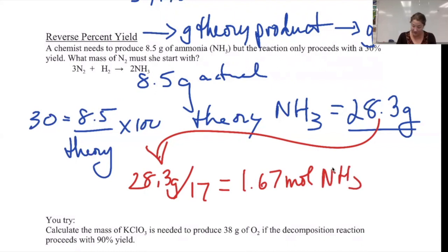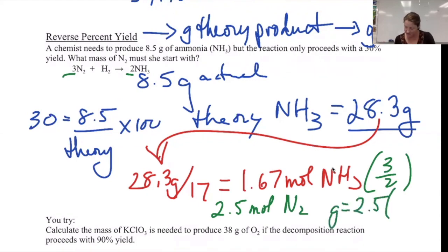Now I need to do a mole ratio, 1 over given. So we're going to start with 2.5 moles of N2. To get the grams of that, 2.5 times the molecular weight of N2.